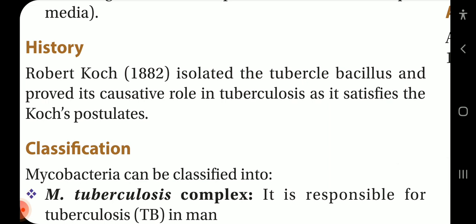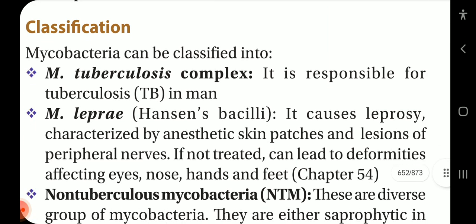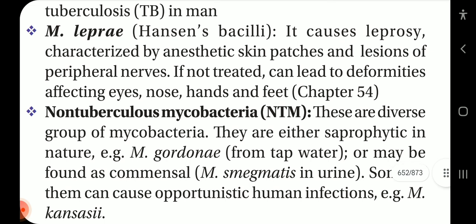Robert Koch isolated the tubercle bacillus and proved its causative role in tuberculosis, as it satisfies Koch's postulates. Mycobacteria can be classified into the M. tuberculosis complex, responsible for tuberculosis in man; M. leprae, Hansen's bacillus, which causes leprosy characterized by anesthetic skin patches and lesions of peripheral nerves — if not treated, can lead to deformities affecting the eye, nose, hands and feet.